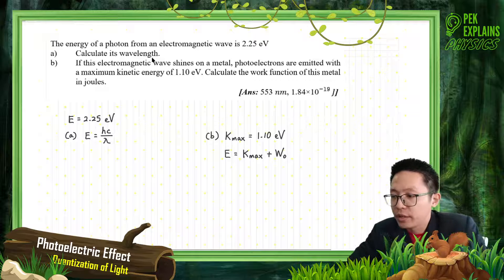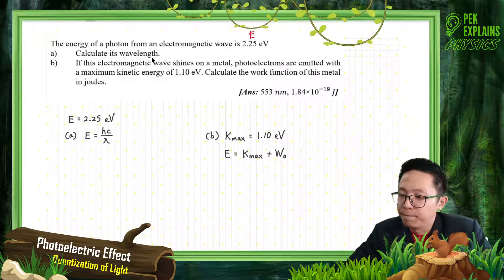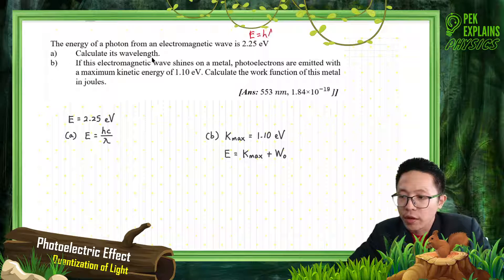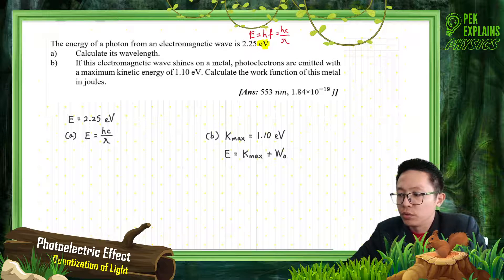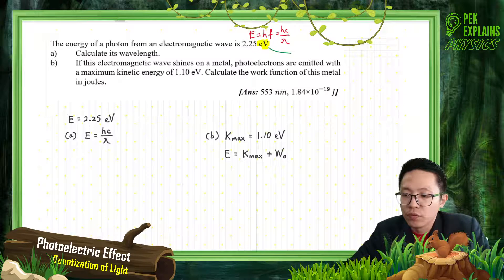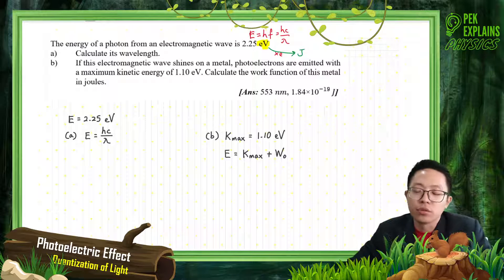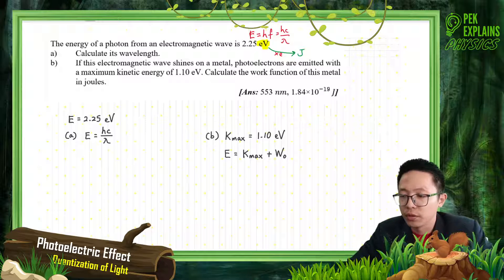We have the energy of the photon, which is equal to hf or hc over lambda. But the unit is in electron volt, so you need to convert to joule first. To convert electron volt to joule, multiply by the electron charge. Make sure you convert to joule before you substitute into the E = hf formula.